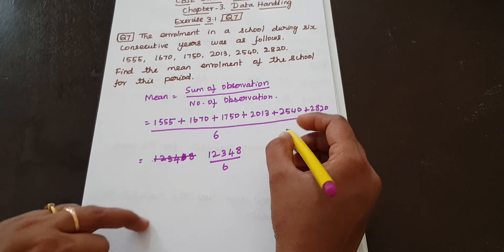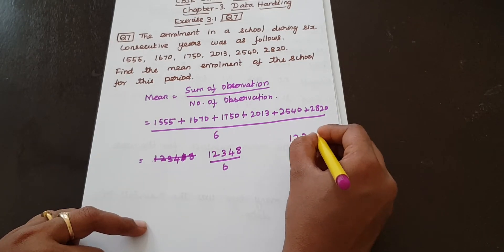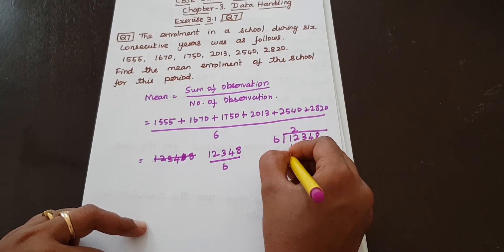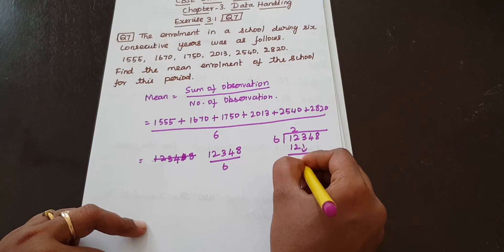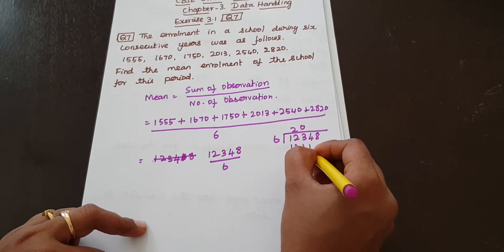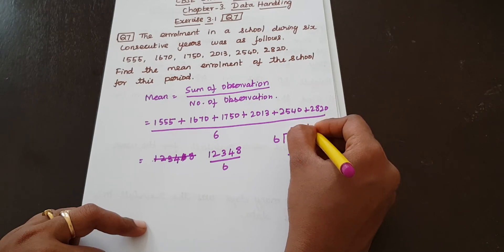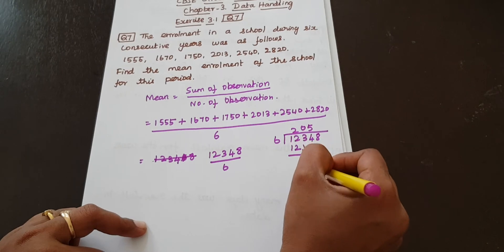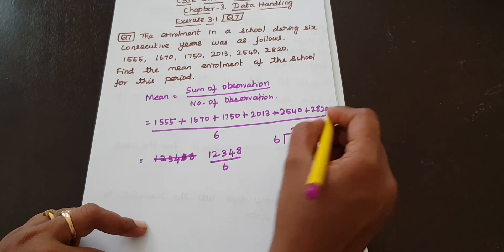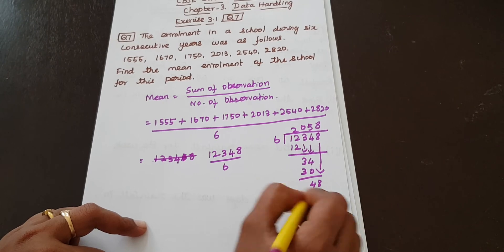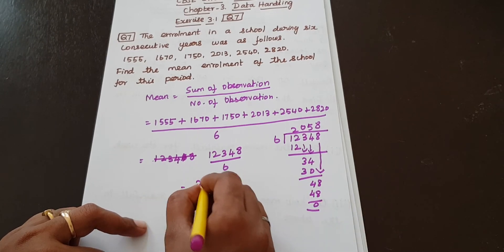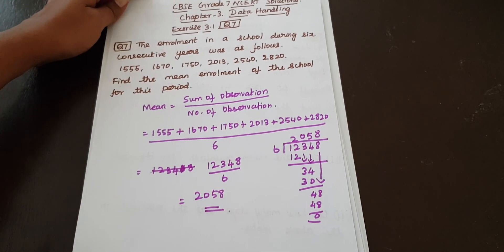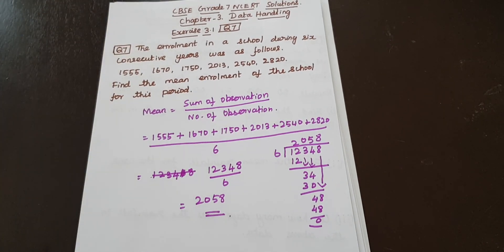Now we can divide. Let's add all of them. The sum is 12058. So let's add all — 2, 0, 5, 8. Next, question number 8.